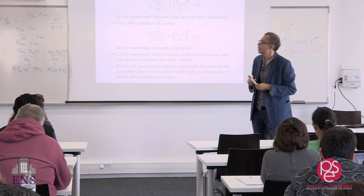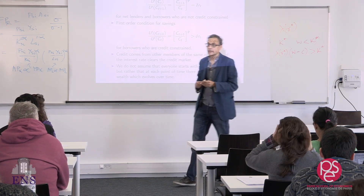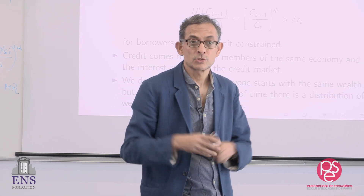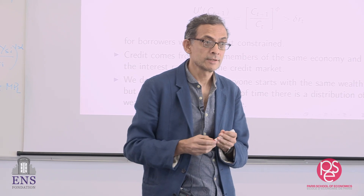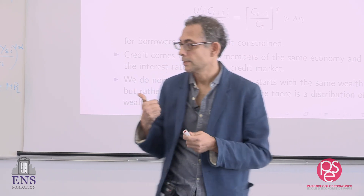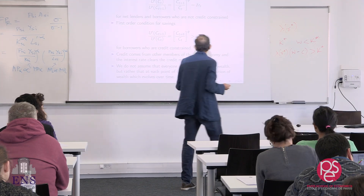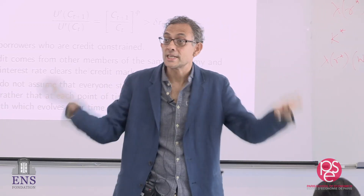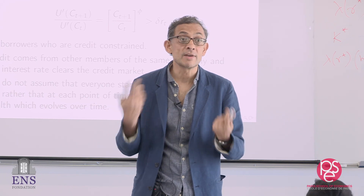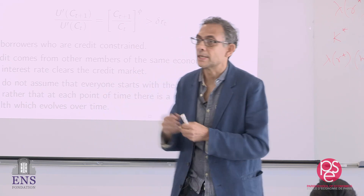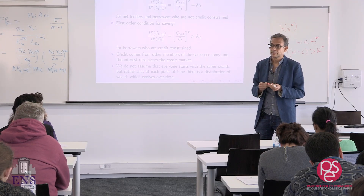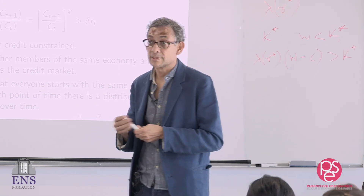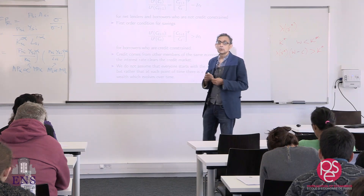In steady state, nobody's credit constrained — if somebody was credit constrained, their consumption would be growing faster, so there would be no one who's going to remain constrained. Credit constraints go away. The steady state of this economy looks just like an economy where there were no credit constraints to start with. So in steady state: no one is credit constrained, you're investing the efficient amount, and maybe there's some inequality. Credit constraints undo themselves through savings.